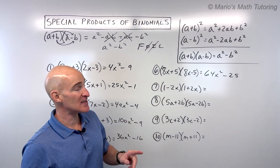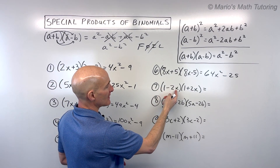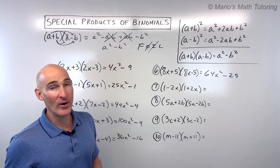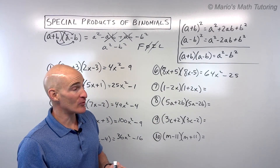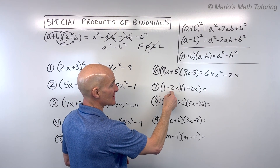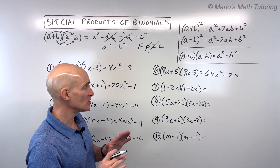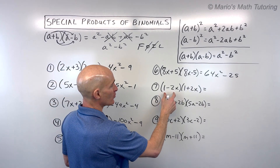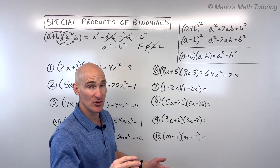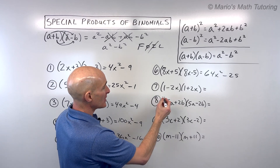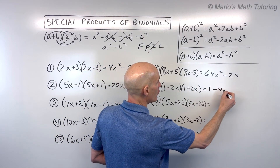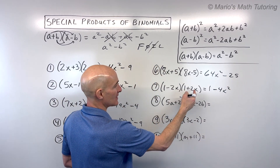Number seven: a common mistake is wanting to switch the terms to put the variable first. But don't do that — the negative is attached to the 2x and they go together as a group. Just recognize 1 and 2x appear in both binomials. First times first: 1 times 1 is 1. Last times last: positive 2x times negative 2x gives negative 4x squared.